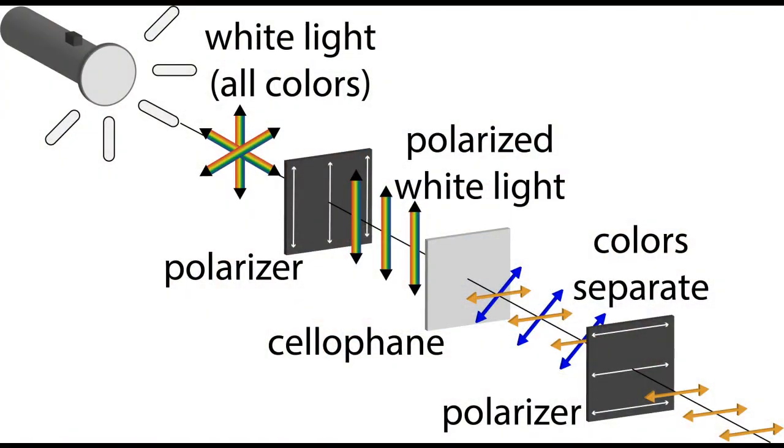So, what is happening? Well, cellophane has a really interesting property, where different colors of light travel through the cellophane at different speeds, which effectively separates the colors of that light. So, we can take white light, which is composed of all the visible colors, and pass it through a polarizer, so that it's polarized white light, and send it through our cellophane, which then separates the colors, and we can use our polarizer to pick out one of those colors.